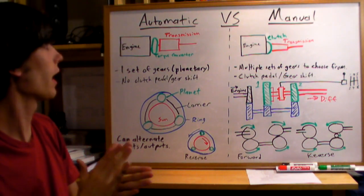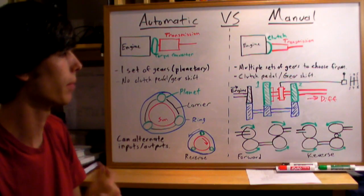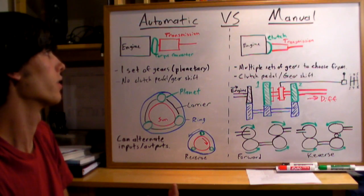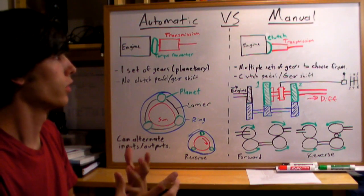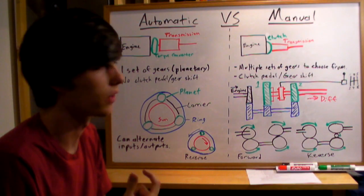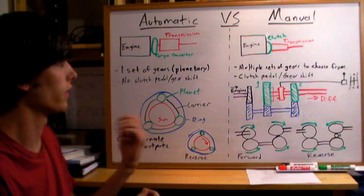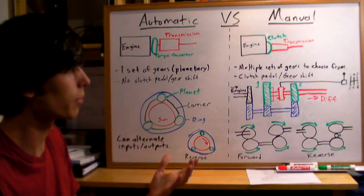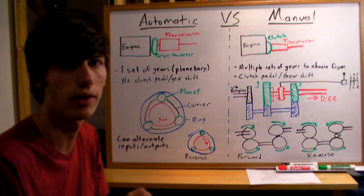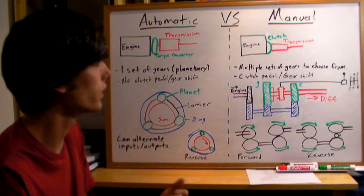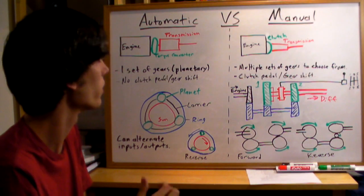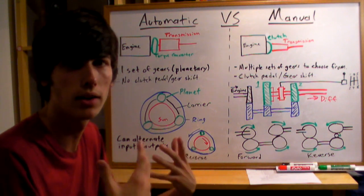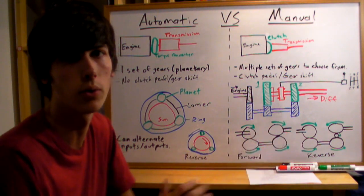That's how an automatic differs from a manual, and there are added benefits to each. Manuals used to get better fuel mileage due to losses in the torque converter, but now they're pretty much even. Personally, I think manuals are more fun to drive — you get a more hands-on feel and it's a better experience. Automatics are more mindless; you just press the gas and everything is done for you.